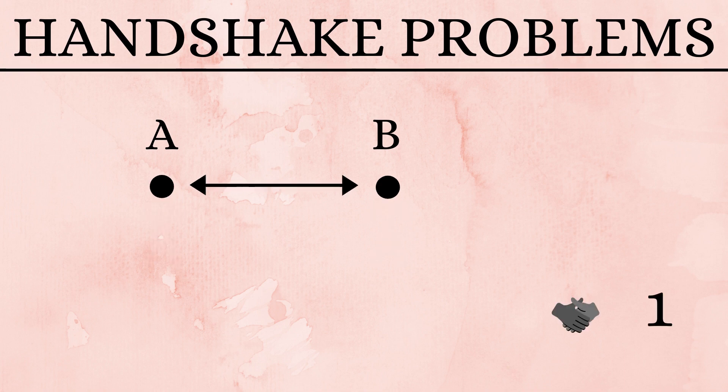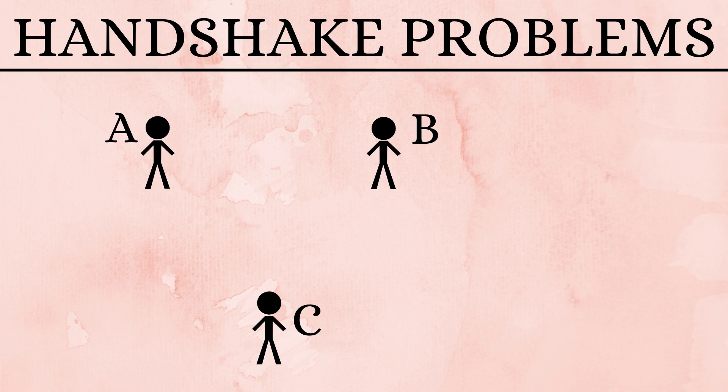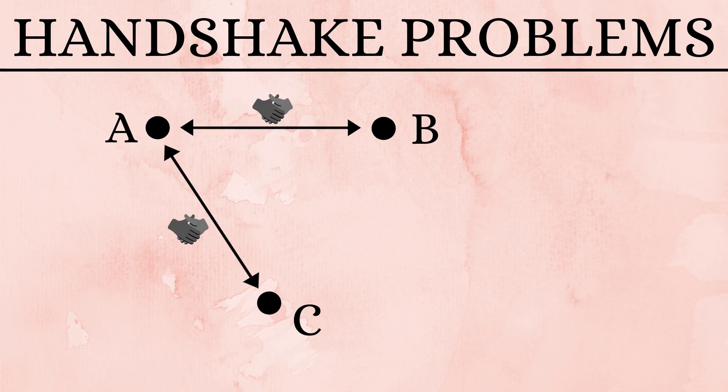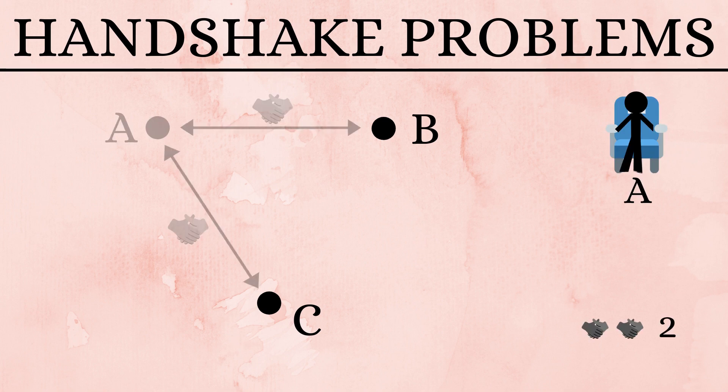Now let's check out for three people A, B and C. Starting off with A, let us assume that A shakes hand with B and C and then he goes and sits down. There are two handshakes done and two more people remaining.